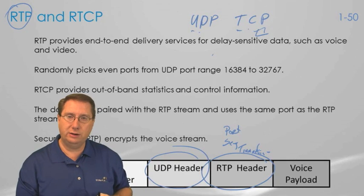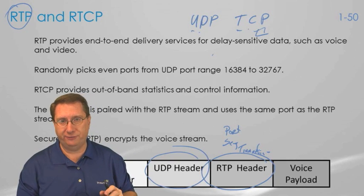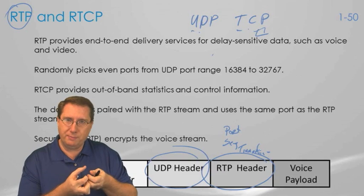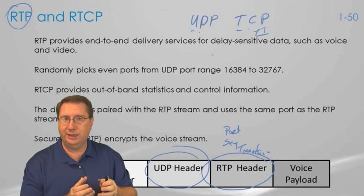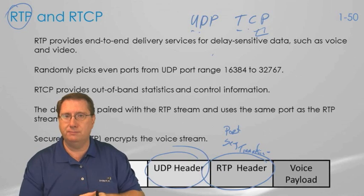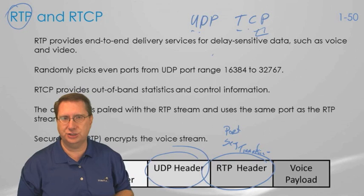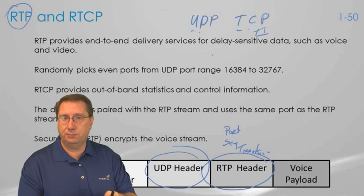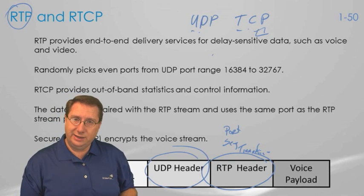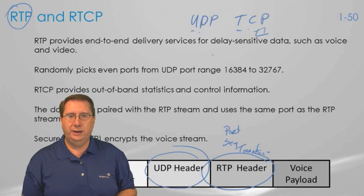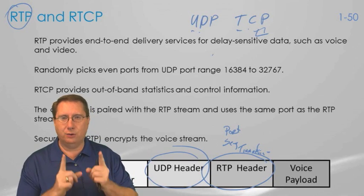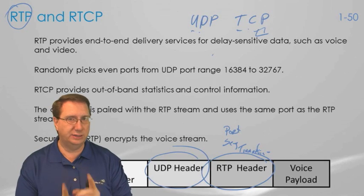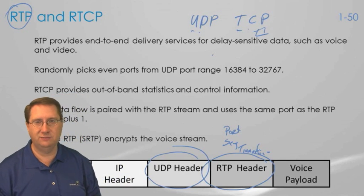We'll talk later about something called a de-jitter buffer, which is this exact method where we absorb the packets, begin reassembly, and then play them back for the listener. It's kind of like skip protection on a CD player - it reads ahead and then plays back. As soon as we incorporate these components into UDP we get reliability, and reliability is what we need without the heavyweight handshake involved in TCP.